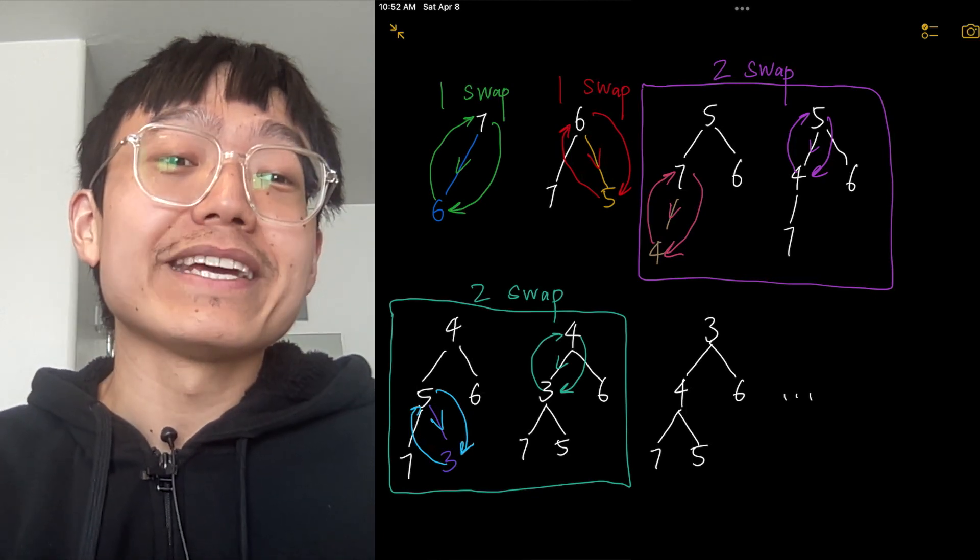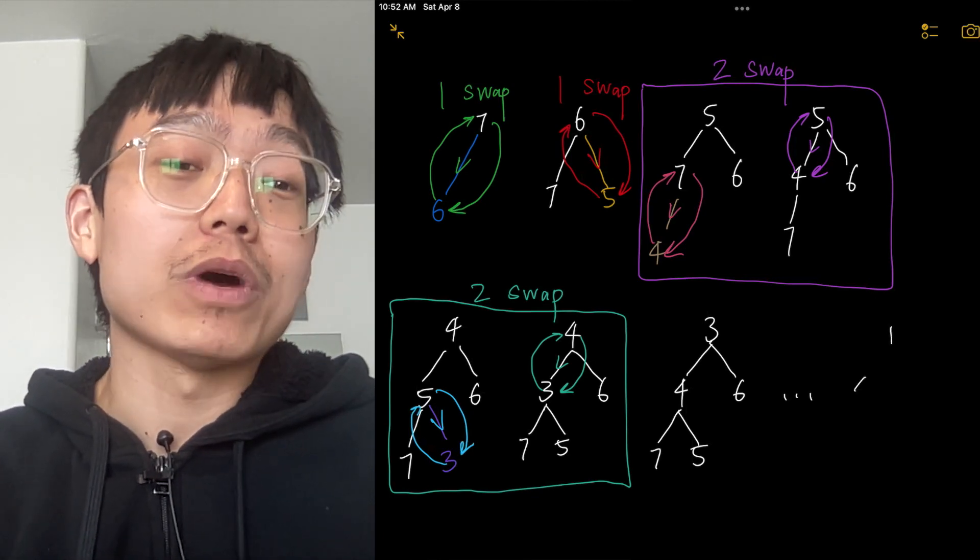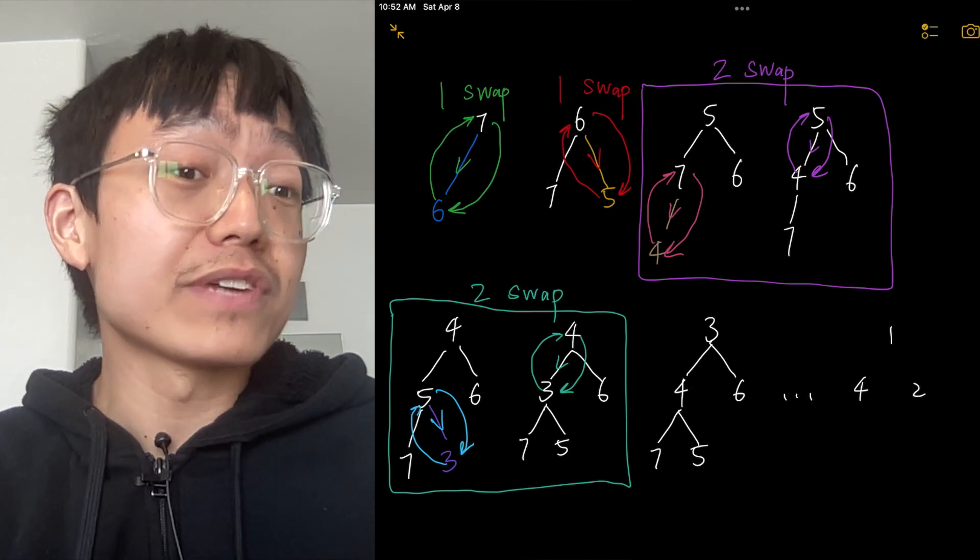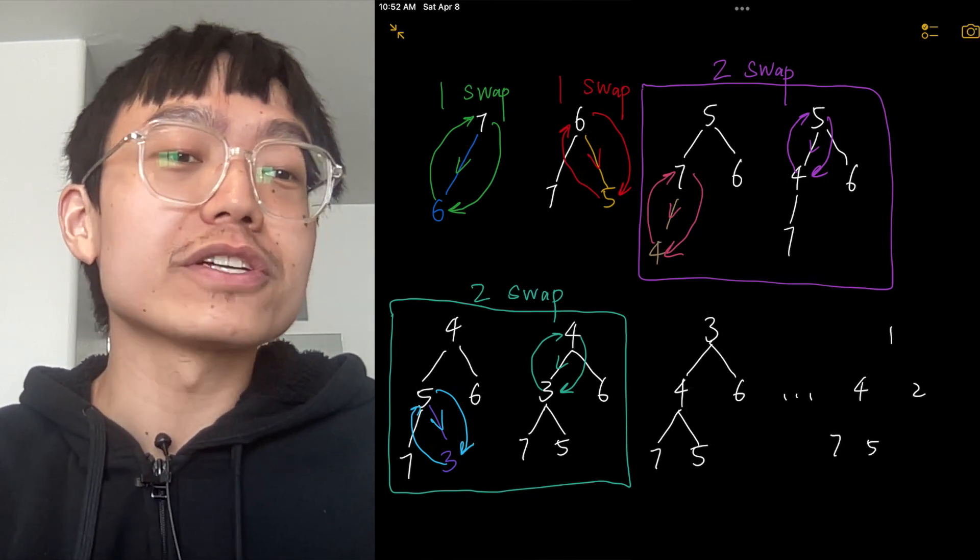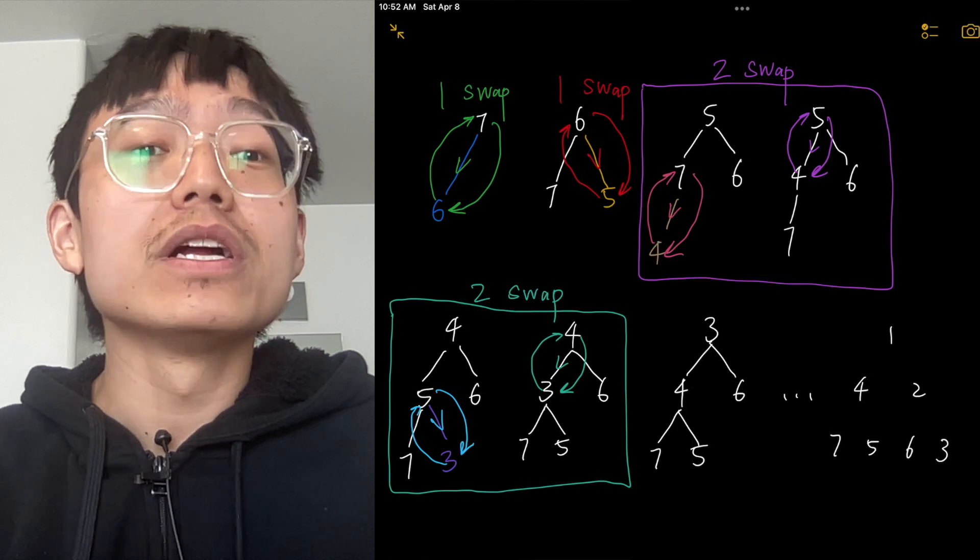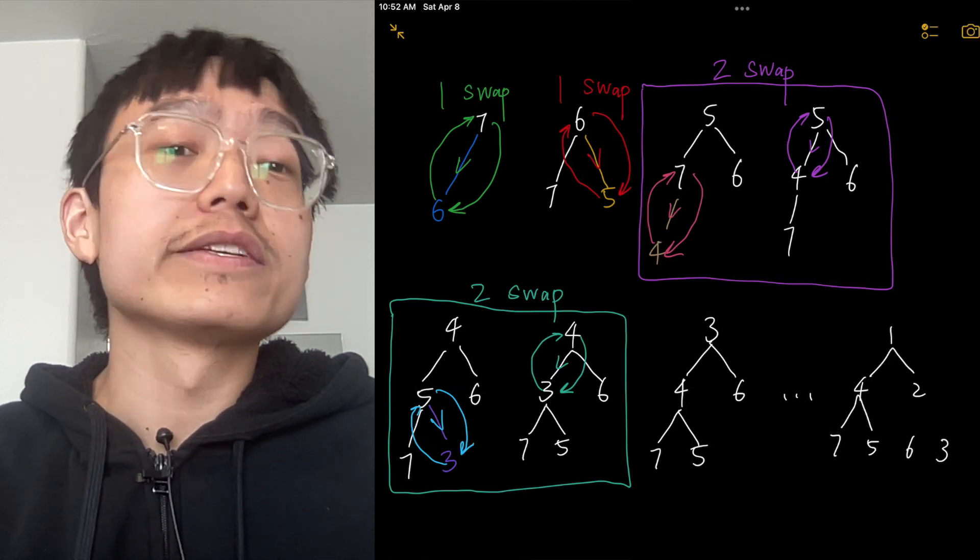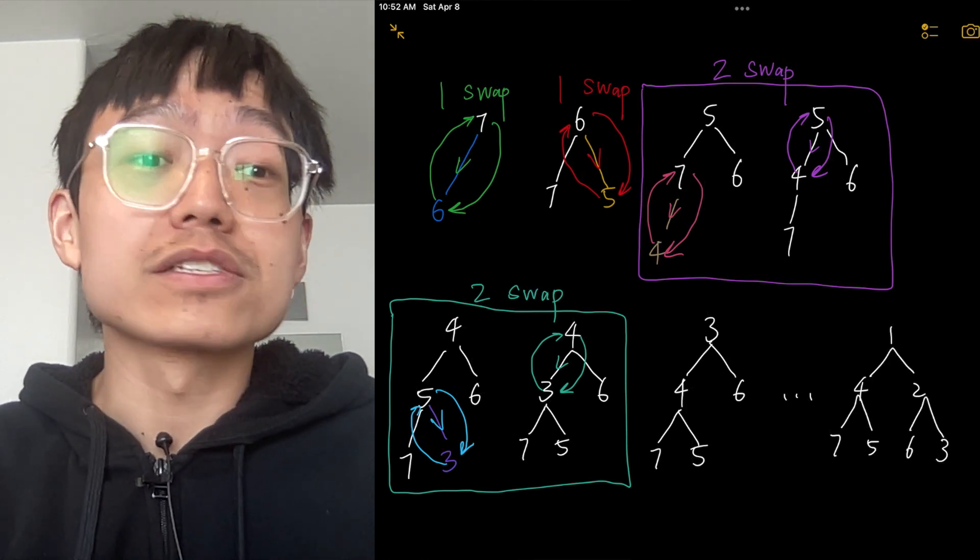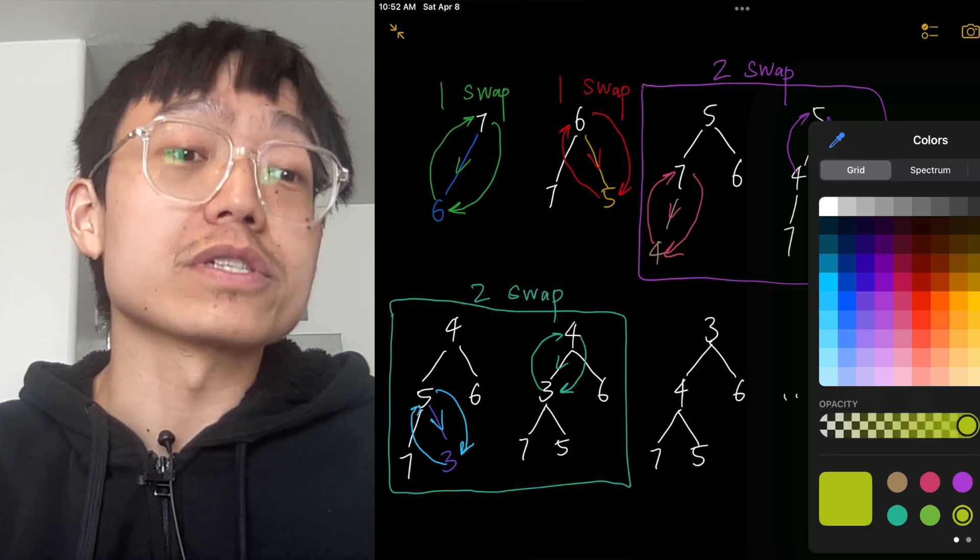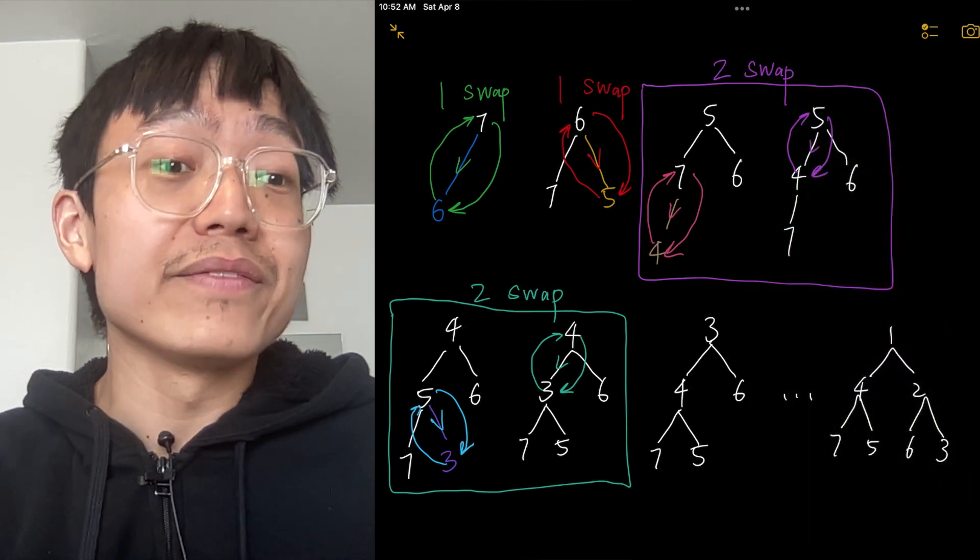If we want to create an empty heap and insert elements one by one using heapify sift up or heap push operation, the time complexity would be O(n log n). This is because each insertion takes O(log n) in the worst case, and we are inserting n elements.